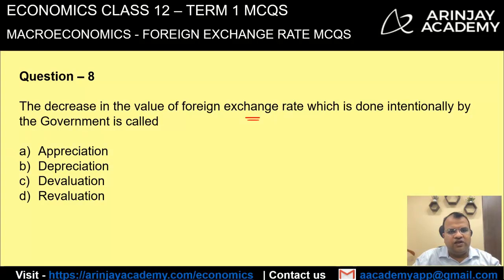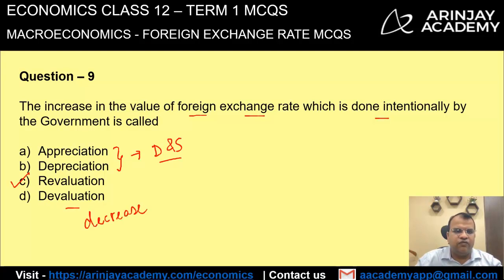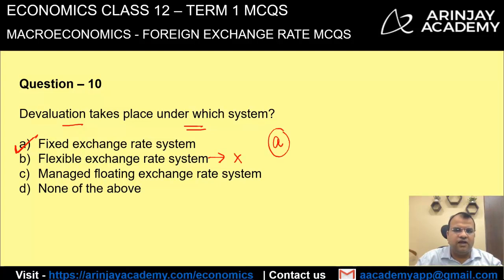The decrease in the value of foreign exchange rate done intentionally by the government is known as devaluation. Revaluation is when there is an increase in the value of foreign exchange rate done by the government. Depreciation and appreciation happen because of market forces of demand and supply. Now, devaluation takes place under which system? It takes place under the fixed exchange rate system — in the flexible exchange rate system it cannot take place. Therefore, the correct answer is A.